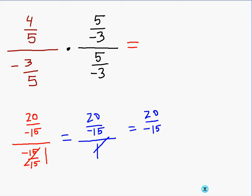Alright, at this point it's just a matter of simplifying it. What goes into 20 and negative 15? Well, 5 does. So we divide both these by 5. 20 divided by 5 is 4, and negative 15 divided by 5 is negative 3.